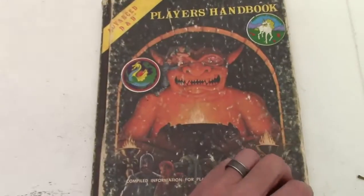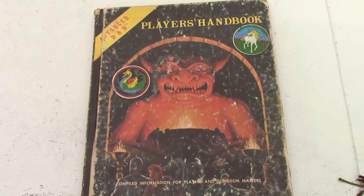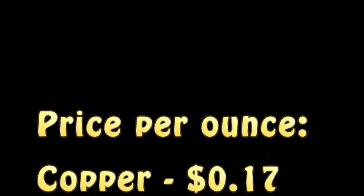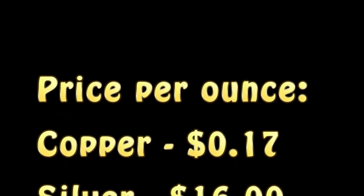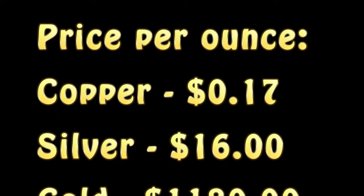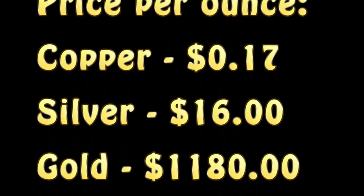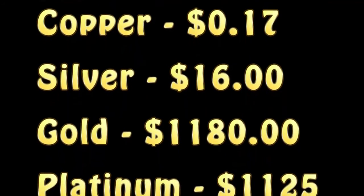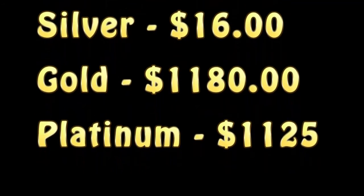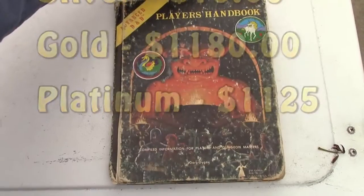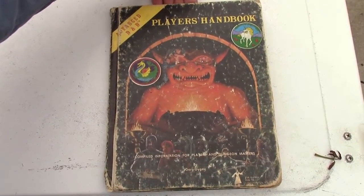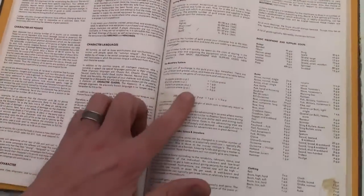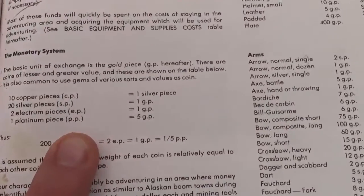It takes five gold pieces to equal one platinum piece. Many role-playing fans are quite certain platinum is more valuable than gold, but as of 2015 when this was made, copper is about 17 cents per ounce, silver is at $16 per ounce, gold is $1,180 per ounce, and platinum is $1,125 per ounce. So the relative values of these native element minerals have changed since the days of the D&D handbook.